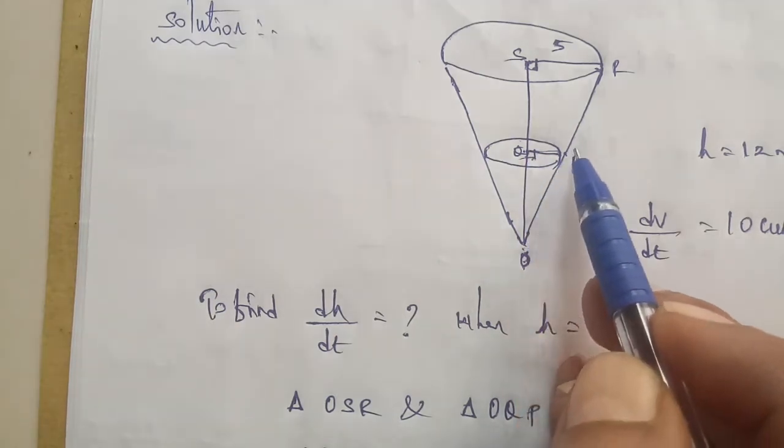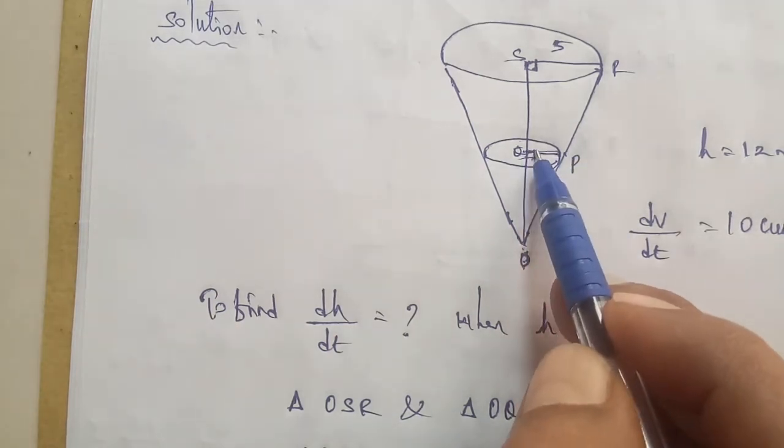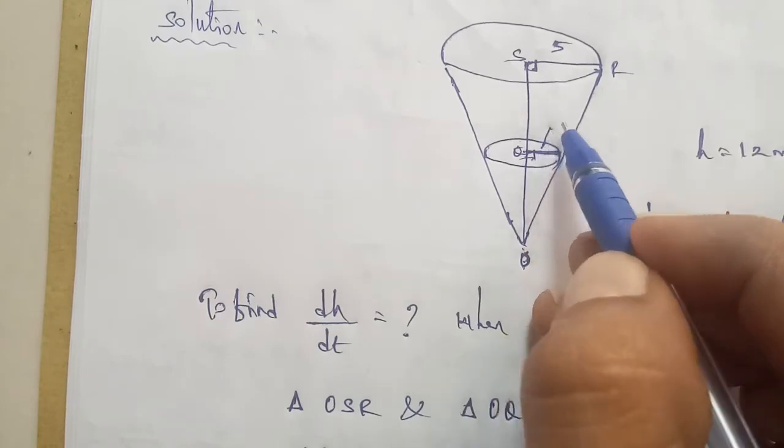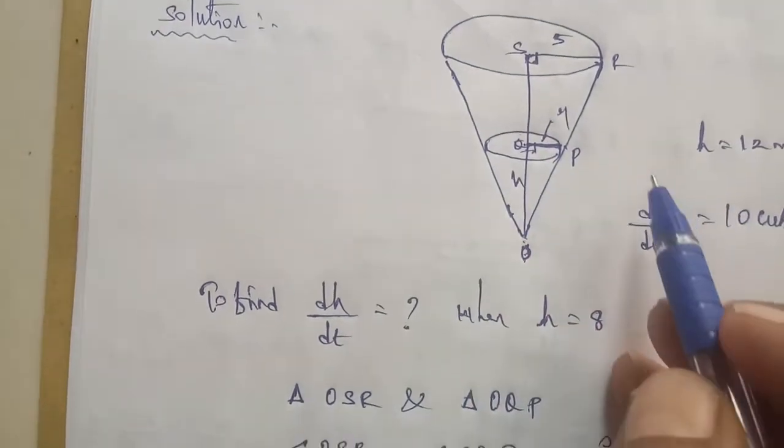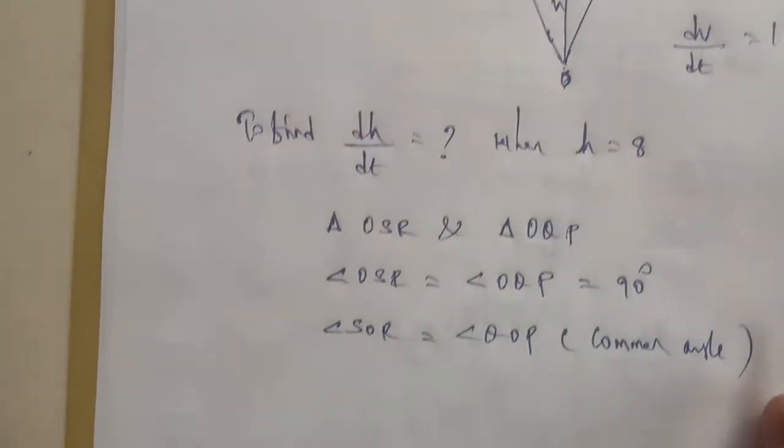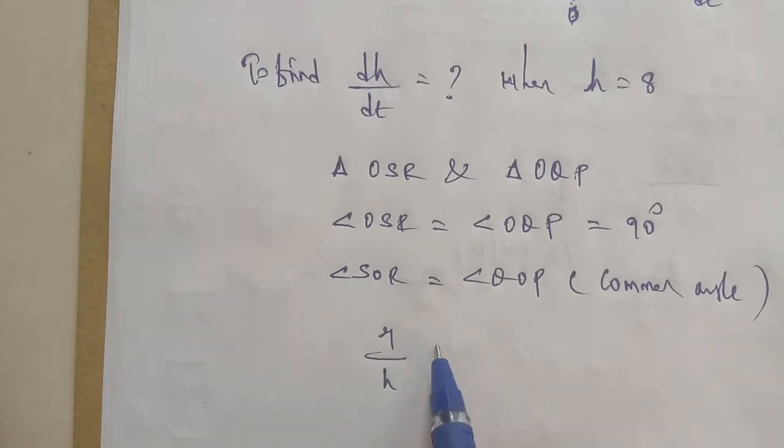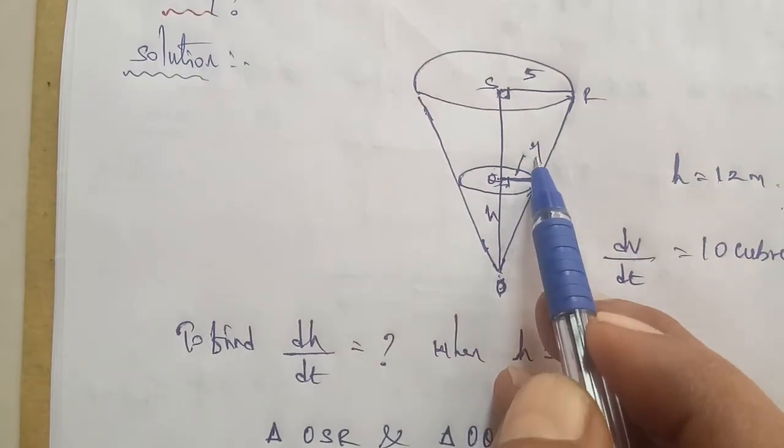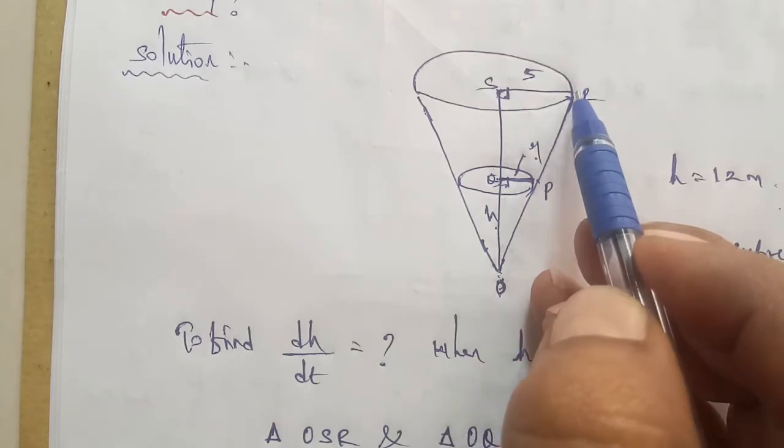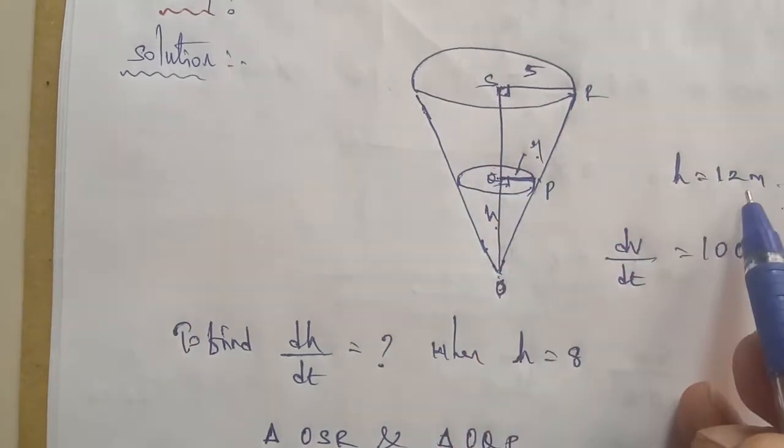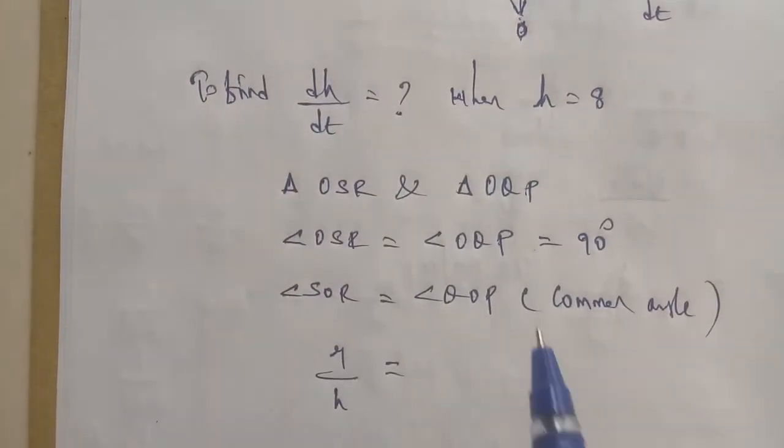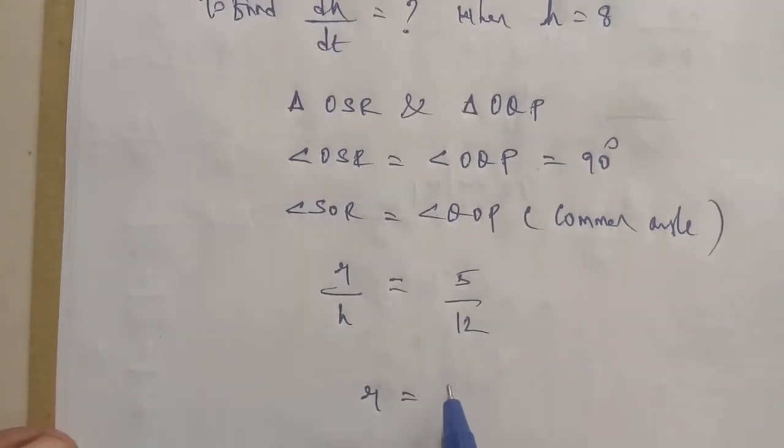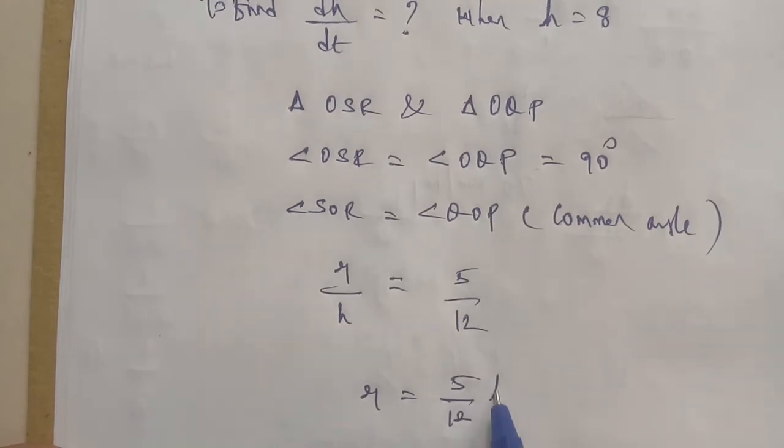So angle to angle similarity will take place. If we take the ratio, in the smaller triangle we can take radius by h. In the larger triangle, we can compare radius total by h. So radius of 5, total height is 12, therefore 5 by 12. Cross multiply: r is equal to 5 by 12 into h. This is the radius.